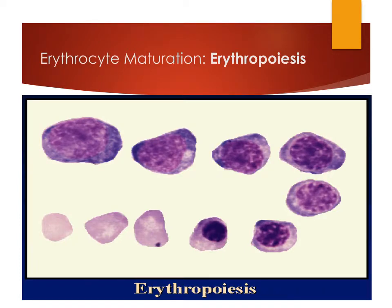Erythropoiesis again: starting with the rubroblast, progressing to the prorubrocyte, then rubrocyte through several stages, then the metarubrocyte with its dark purple nucleus — sometimes yielding a Howell-Jolly body — then the polychromatophil, and finally the mature erythrocyte or red blood cell.